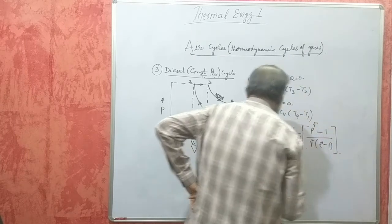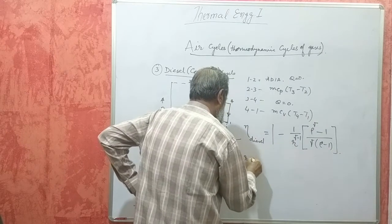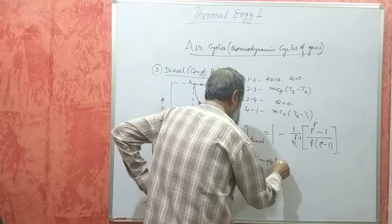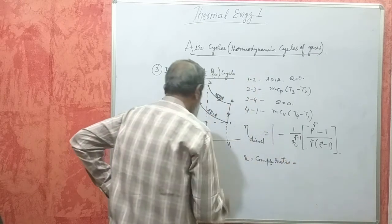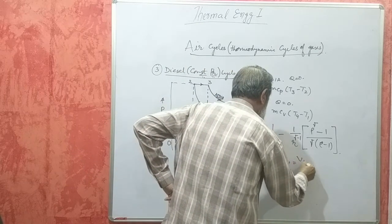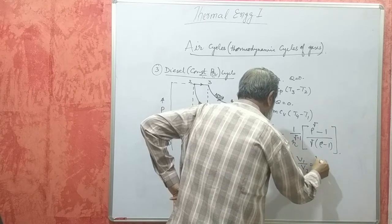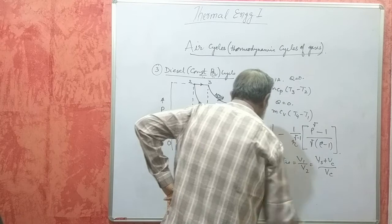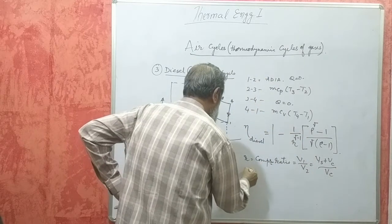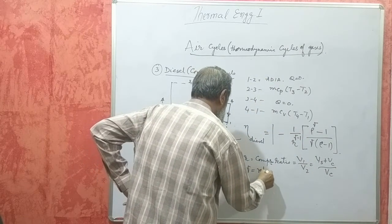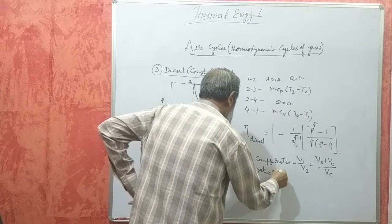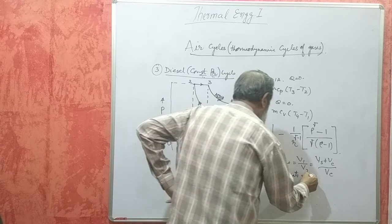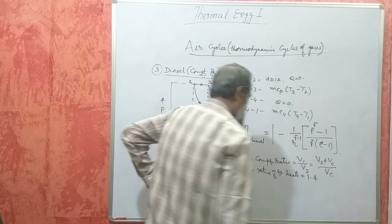Here, R is the compression ratio, same as in the Otto cycle, that is V1 by V2, which equals (Vs plus Vc) divided by Vc. Gamma is the ratio of specific heats, Cp by Cv, which is 1.4. Even if it is not given, we can assume it.